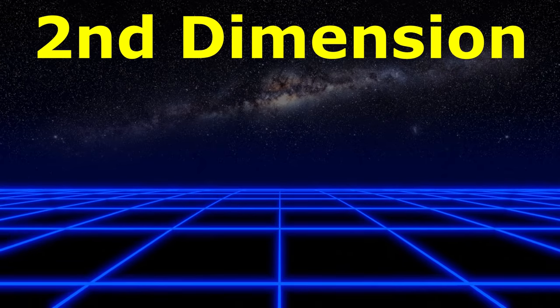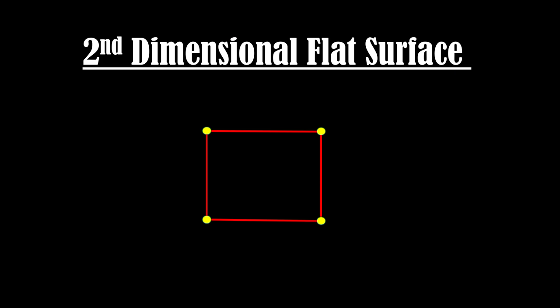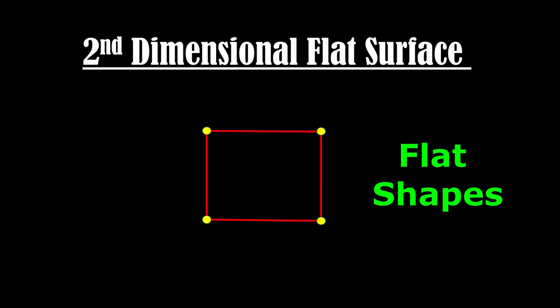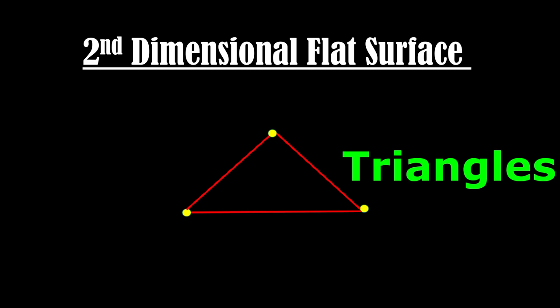Second dimension. Second dimensional or 2D objects are flat shapes like squares and triangles. Motion of a two dimensional being is restricted to a plane surface, therefore it cannot move upward or downward.